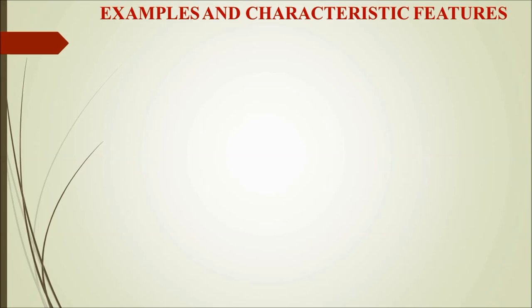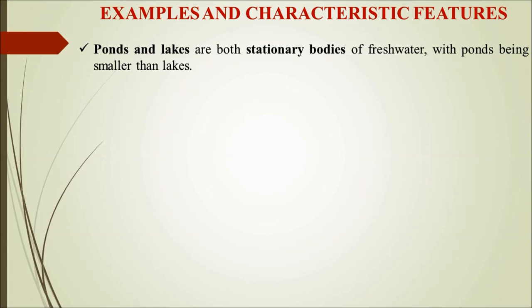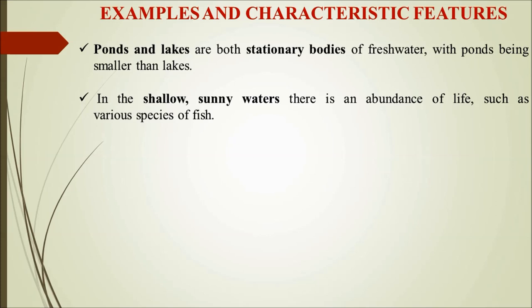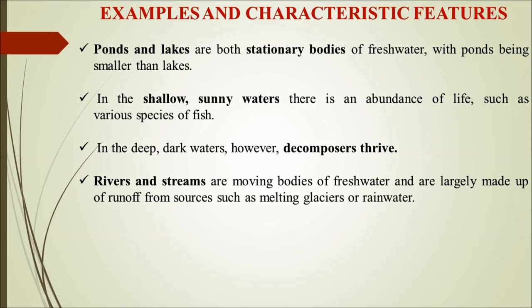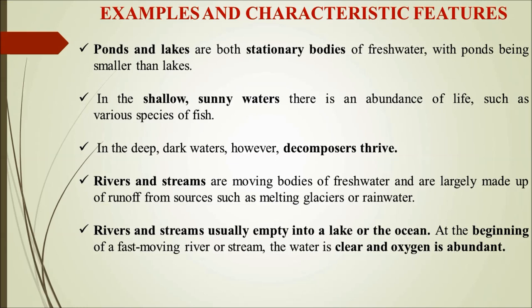Ponds and lakes are stationary bodies of freshwater, with ponds being smaller than lakes. In shallow, sunny waters there is an abundance of life and various fish, while in deep dark waters, decomposers survive. Rivers and streams, by contrast, are moving bodies largely made up of runoff from melting glaciers or rainwater, and they usually empty into a lake or the ocean.